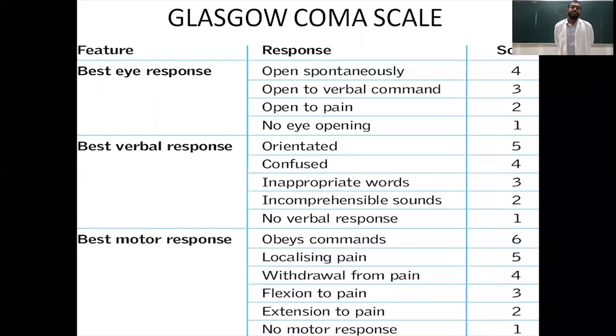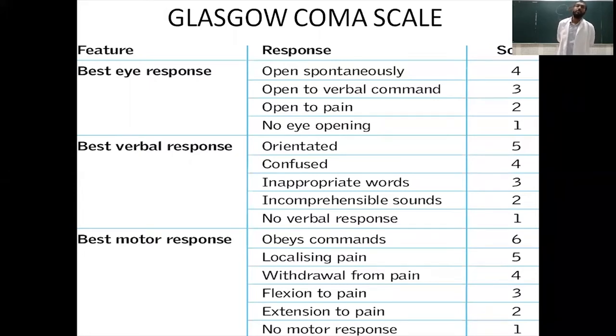The best verbal response includes oriented responses, confused responses, inappropriate words, incomprehensible sounds, and no verbal response. The maximum possible score for V is 5.